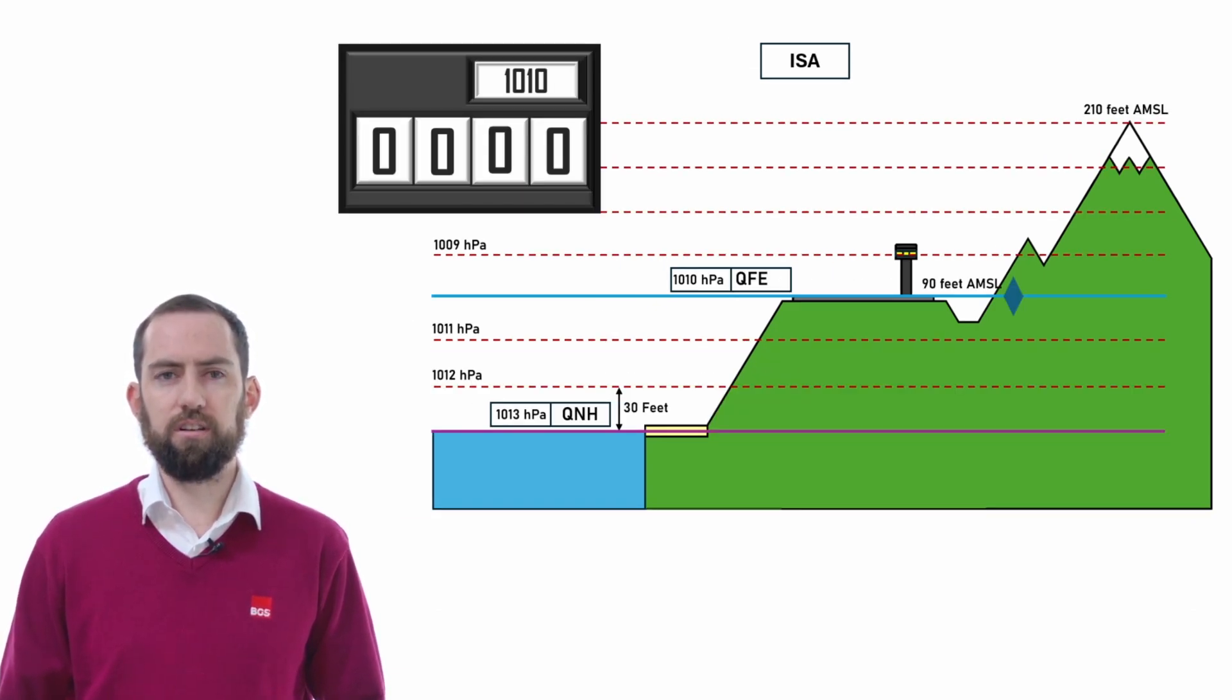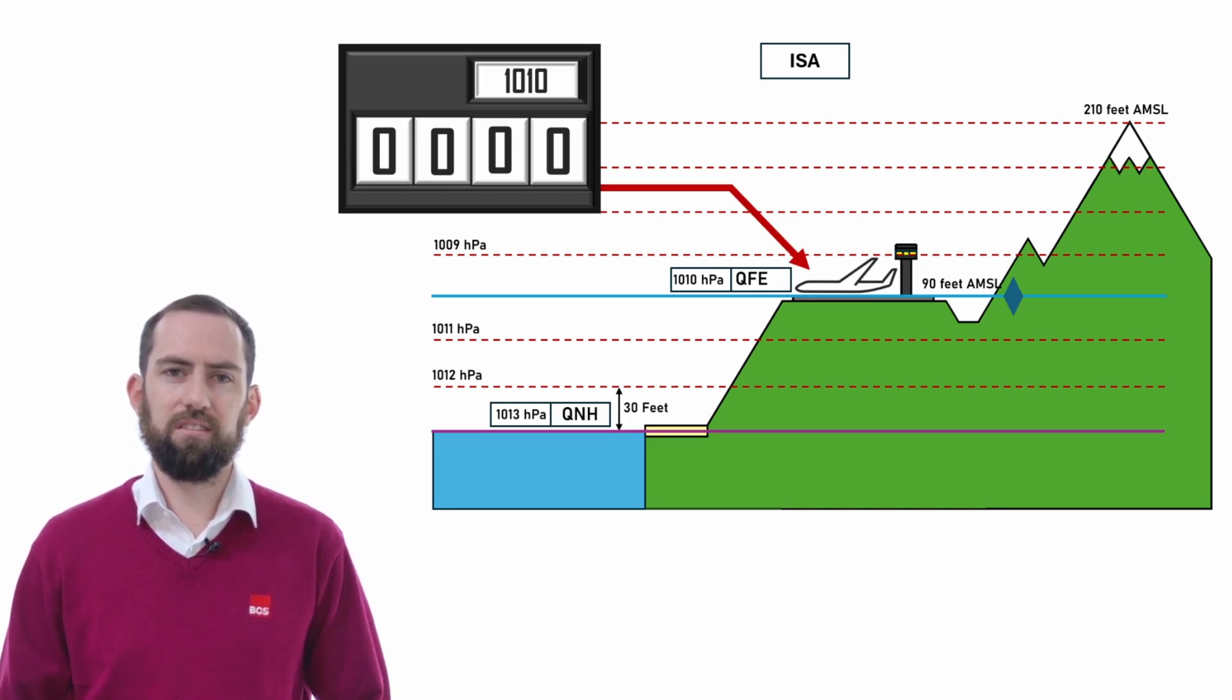Now let's introduce an altimeter into the picture. It is worth noting that in a perfect ISA atmosphere, which would be unthinkably rare, our altimeter will do exactly what it's supposed to, ignoring any problems with the instrument itself. Returning to what I said previously, the pressure datum that we will input into the Kollsman window is the place that we want it to read zero.